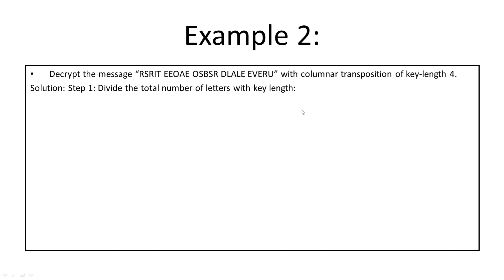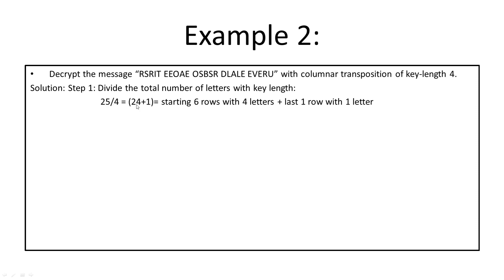Step one: count the total number of letters and divide by the key length. There are 25 total letters. Dividing by four gives 24 plus 1, meaning six rows with four letters each, and one last row with one letter.